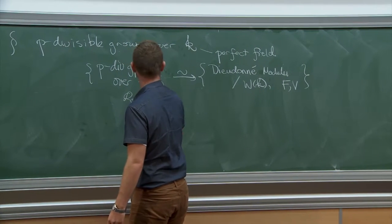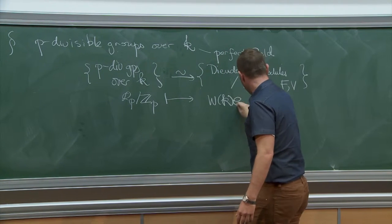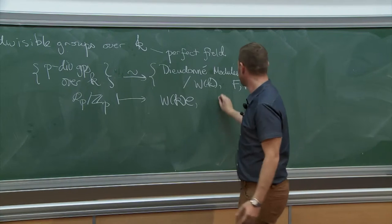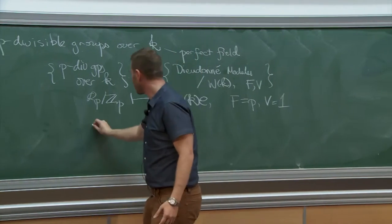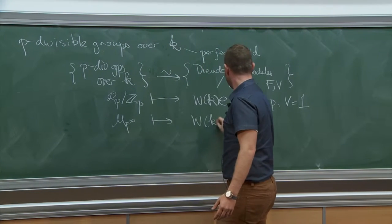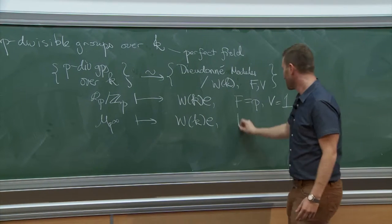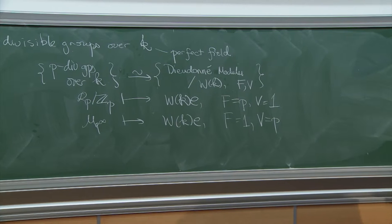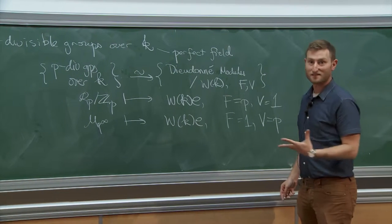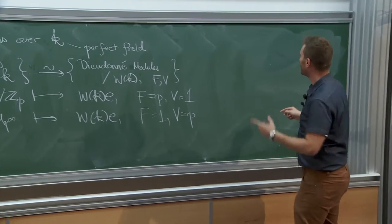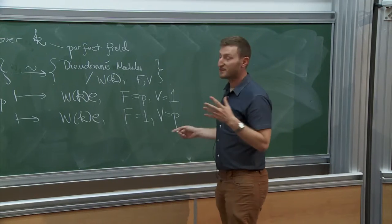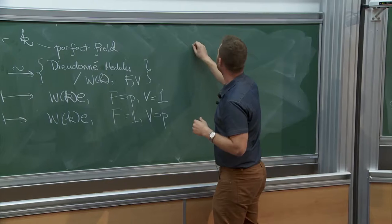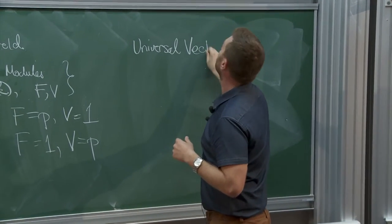There are different equivalent formulations of how to construct the Dieudonné module. I want to do it from the point of view of universal vector extensions of a p-divisible group. So I will construct the Dieudonné module in terms of universal vector extensions. If R is a K-algebra and H is a p-divisible group, I can take H and evaluate it on R to get an abelian group — H is a functor from K-algebras to abelian groups.